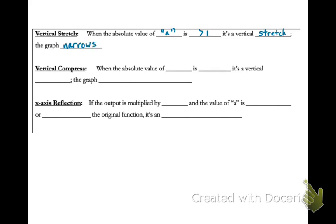For a vertical compress, that happens when our a value, that constant in the equation, is less than 1. It's called a vertical compress, and the graph widens or flattens. It is compressed away from the y-axis. An x-axis reflection occurs if the output is multiplied by a, and the value of a is opposite or negative of the original function. That is what we call an x-axis reflection.